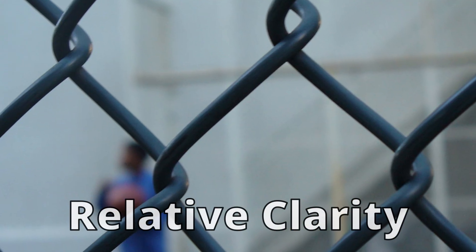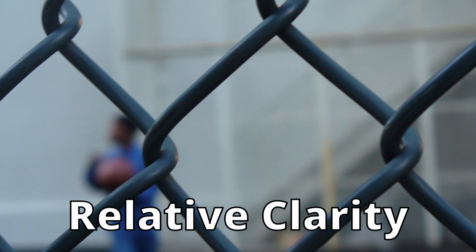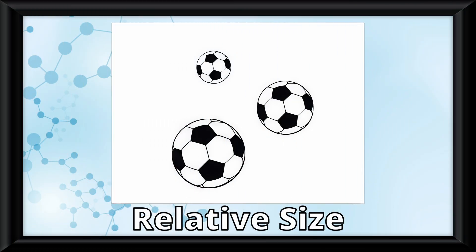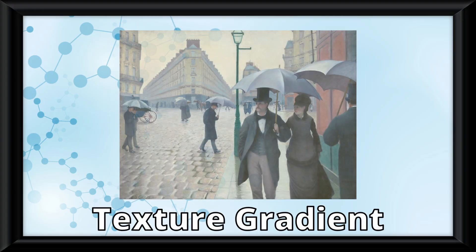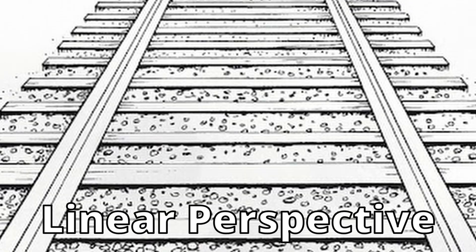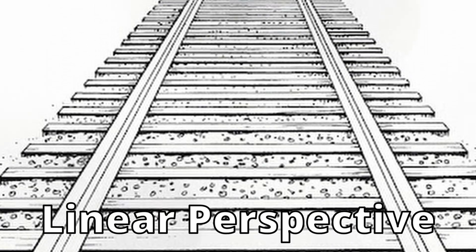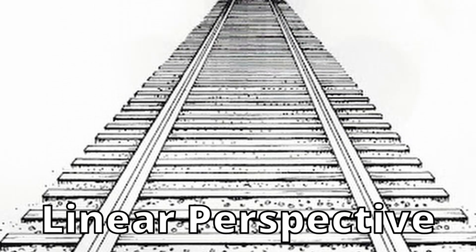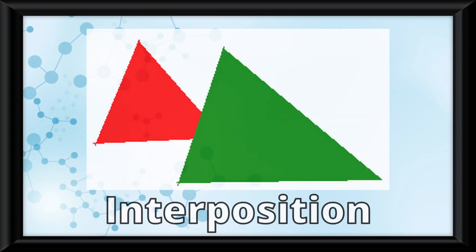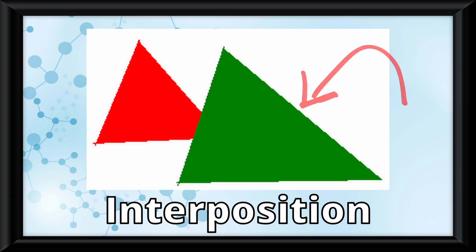Relative clarity is where you perceive things as being farther away if they are hazy or blurry. Relative size is where you perceive smaller objects as being farther away. Texture gradient is when something appears more detailed when it is closer. Linear perspective is when parallel lines look like they converge, but in reality they are simply just farther away. And finally, interposition is where an object blocking another object appears closer.